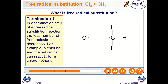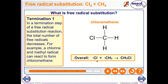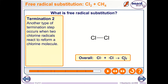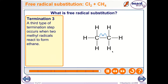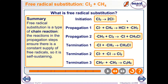To stop the reaction, we need to get rid of all the free radicals — this is termination. One way is a chlorine free radical reacting with a methyl free radical to form chloromethane. Another way is a chlorine free radical combining with another chlorine free radical to give chlorine gas. A third way is a methyl free radical reacting with another methyl free radical to give ethane. These are all the steps in free radical substitution: initiation, propagation 1, propagation 2, termination 1, termination 2, and termination 3.